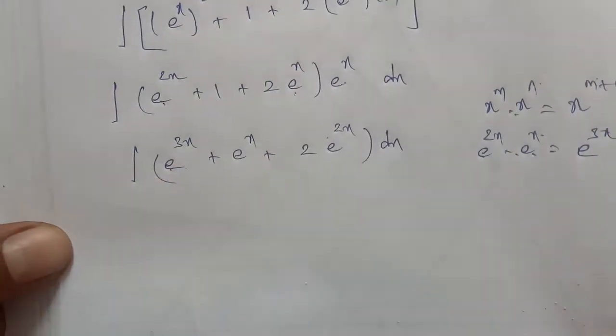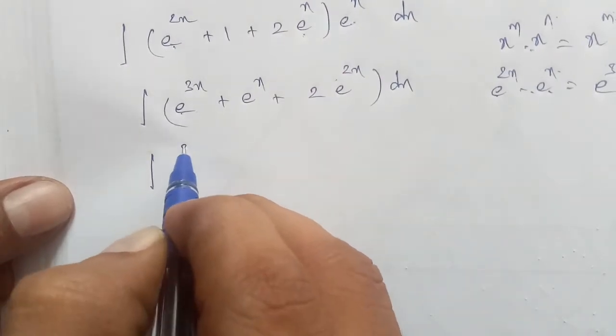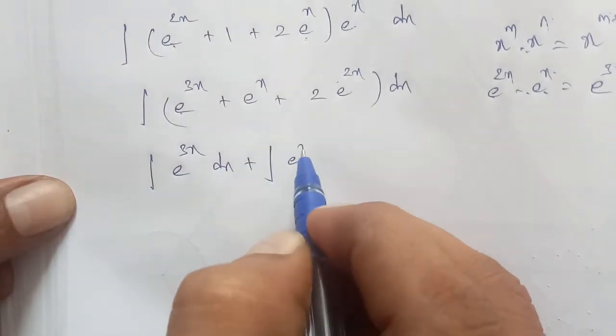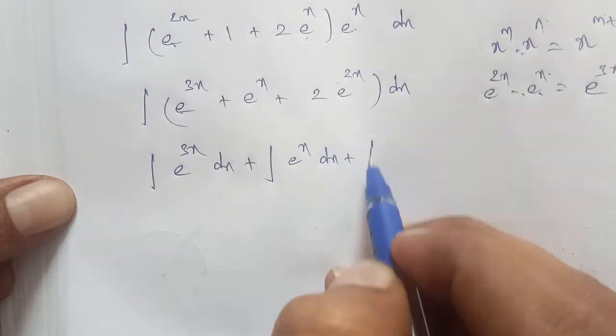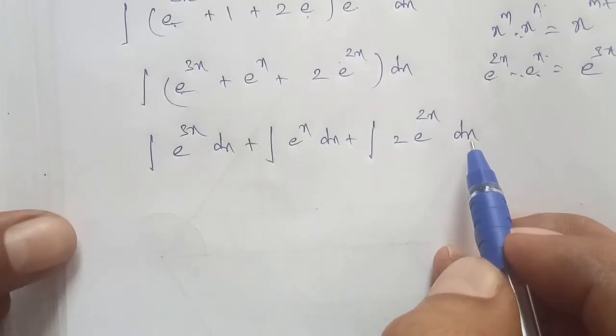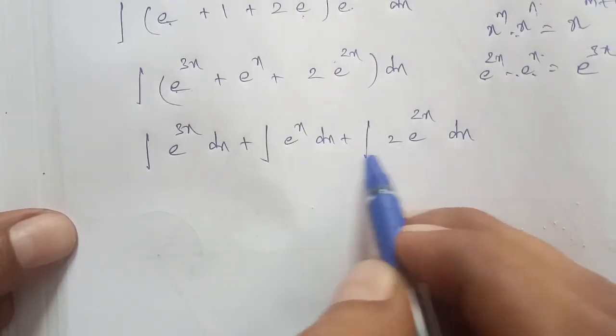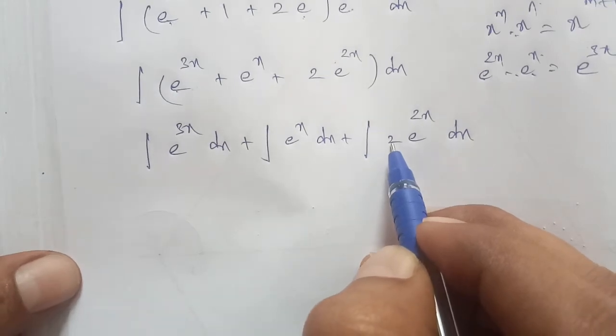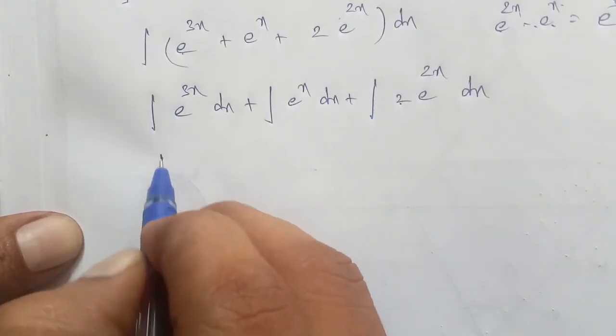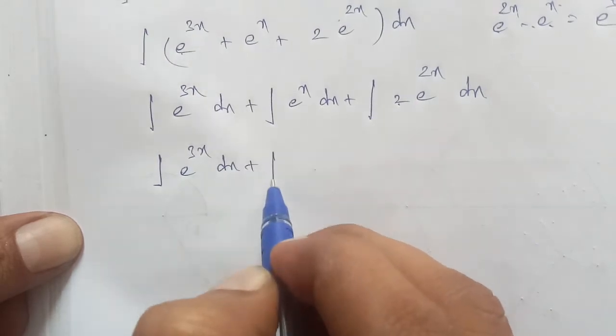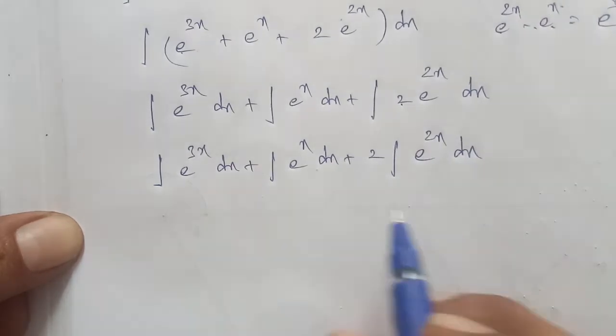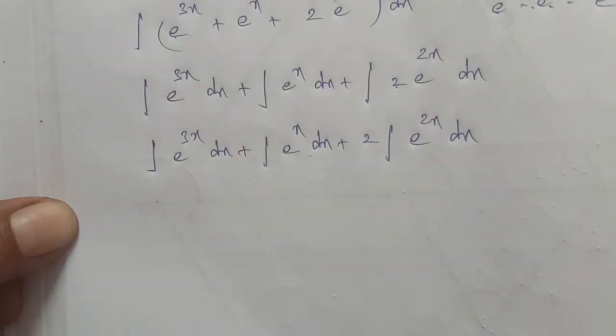Therefore, integration of e^(3x) dx plus integration of e^x dx plus integration of 2*e^(2x) dx. We can take the constant term out, so: integral of e^(3x) dx plus integral of e^x dx plus 2*integral of e^(2x) dx.